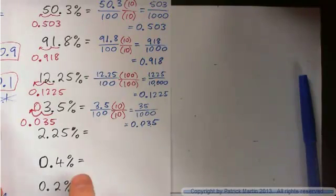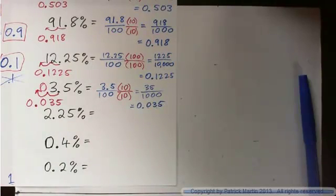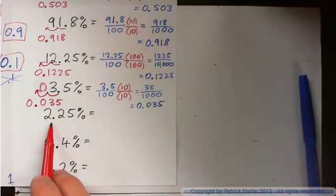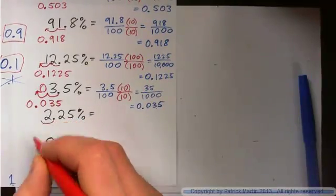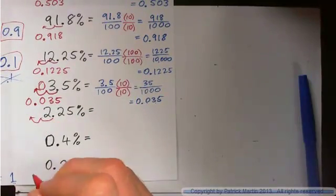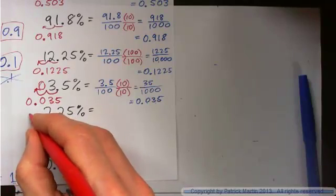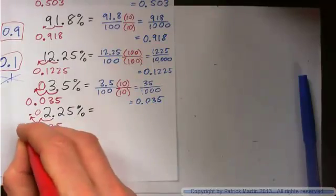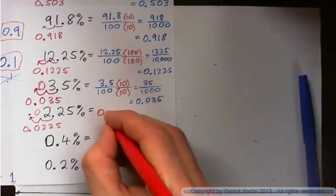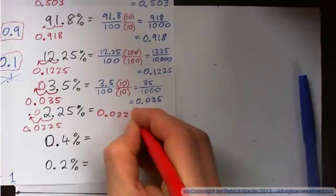So what about this guy? 2.25 per cent? Let's just do it the quick way. Move the decimal point two spaces to the left. What are you going to get? So you don't just stop here. You've got to go two spaces. So it's 0.0225.